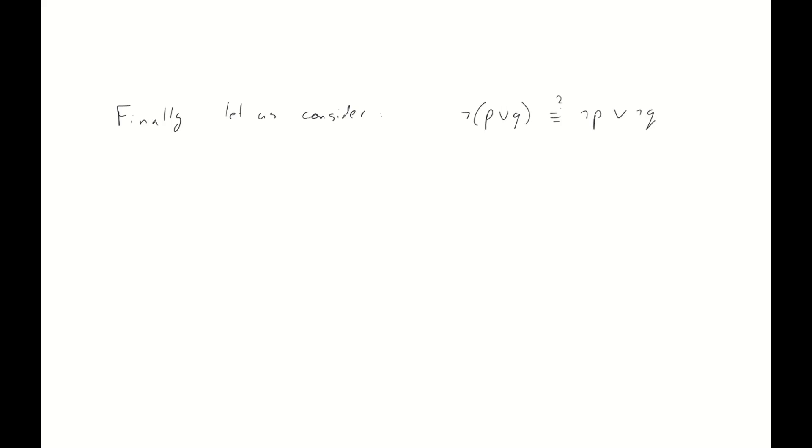Now if you studied De Morgan's law, you know that this isn't the case. It's actually equal to not P and not Q. But let's apply the truth table magic anyway, and let's see what happens.